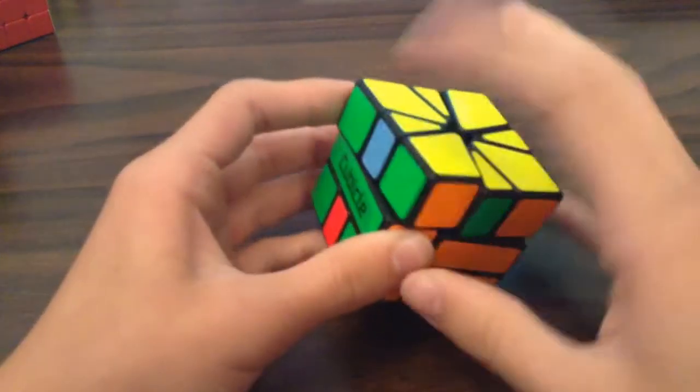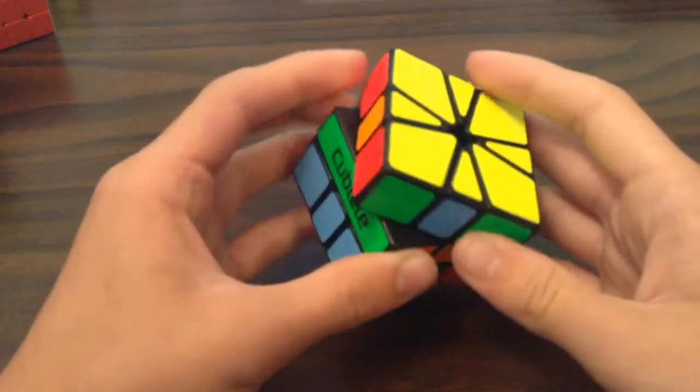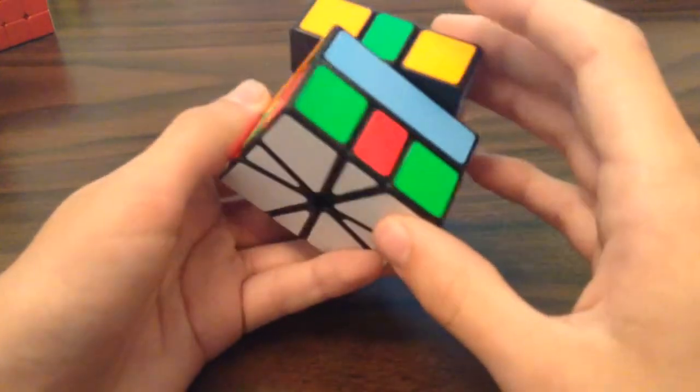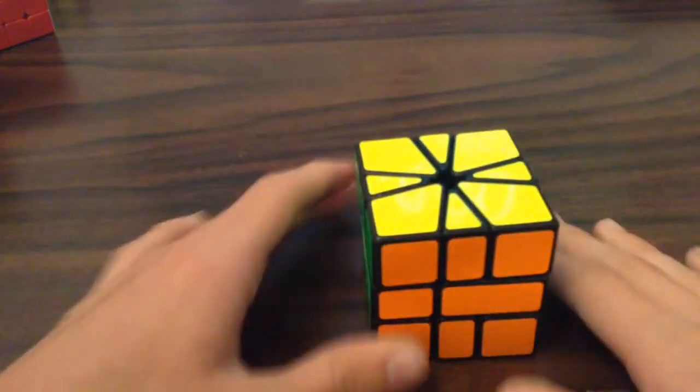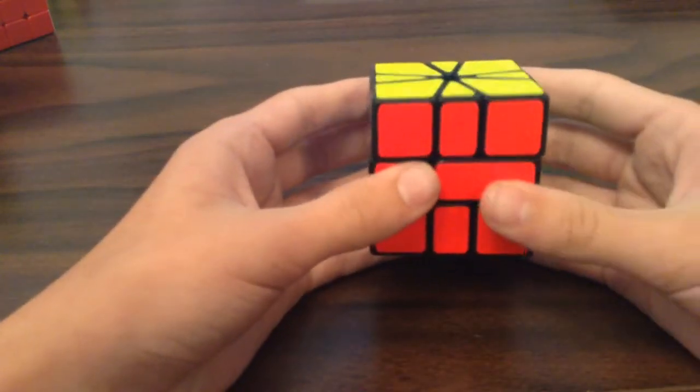And then I just have this case. W perm on top, adjacent on the bottom. Okay. Next scramble.